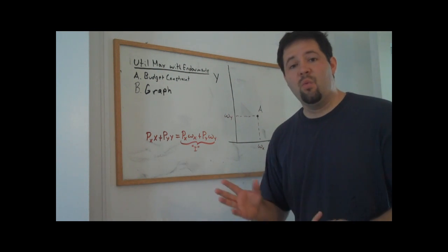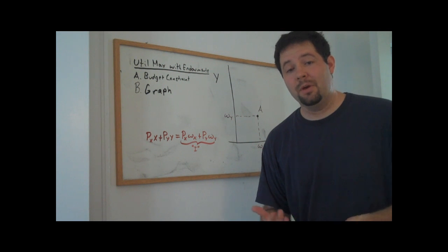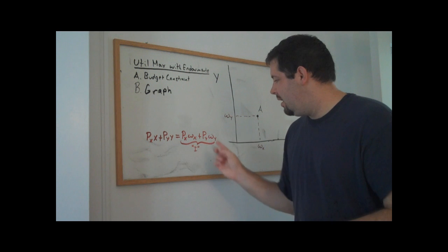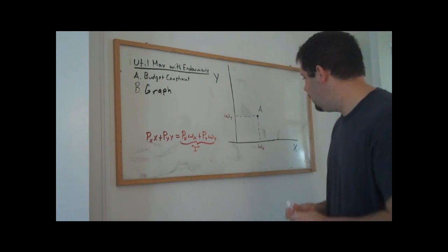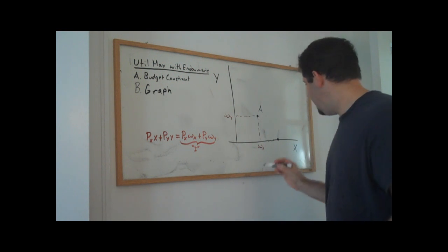So really, we only need to ask one of these questions, and then we'll have two points that are on our endowment economy budget constraint. So let's say we ask how much X could this consumer afford, and we come up with this much here. Then we have two points on the line, and we can connect the dots.